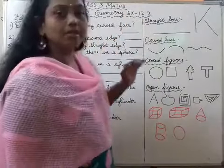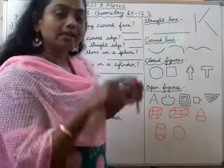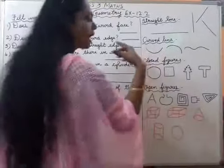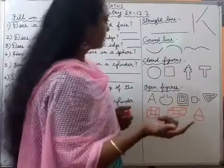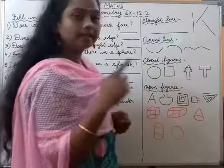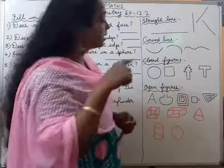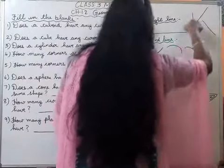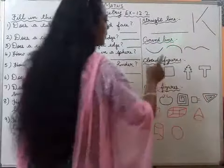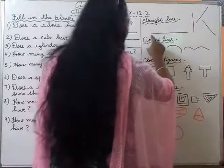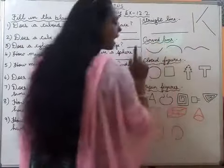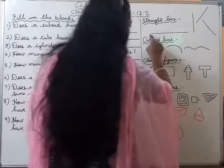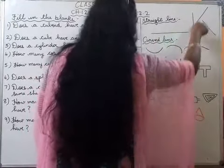Straight line — a straight line can be a sleeping line, a standing line, or a slanting line. But the line should be straight. This is a straight line.